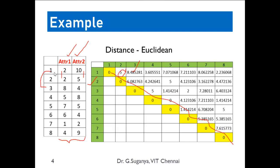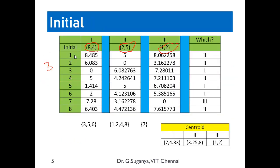To find the distance from each element to the leaders, again we use the same Euclidean formula. The first element is (2,10). The distance to the first leader (8,4) is: (2−8)²=36 plus (10−4)²=36, summing to 72; square root gives approximately 8.485. The distance to the second leader (2,5) is 5, and to the third leader (1,2) is 8.06. The minimum is 5, which falls into the second cluster — so element 1 is assigned to the second cluster. Similarly, element 2 gives distance 0 to leader 2, so it falls into the second cluster.